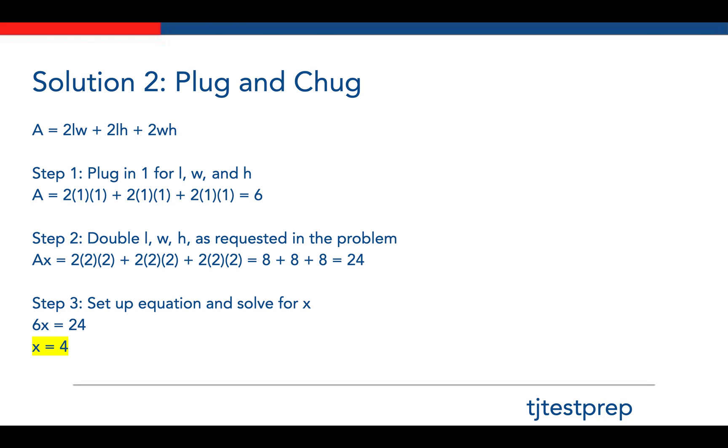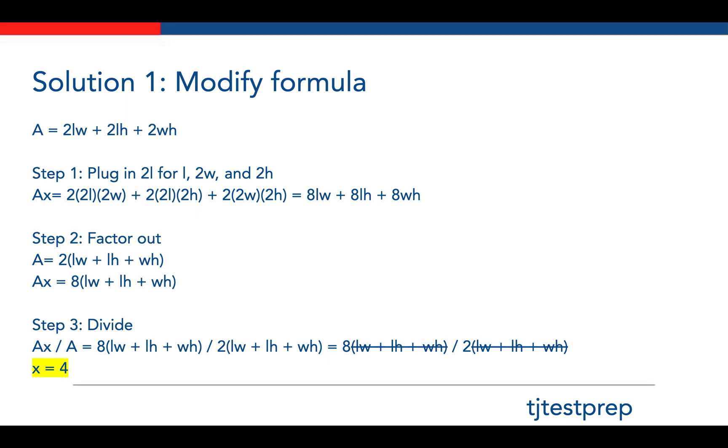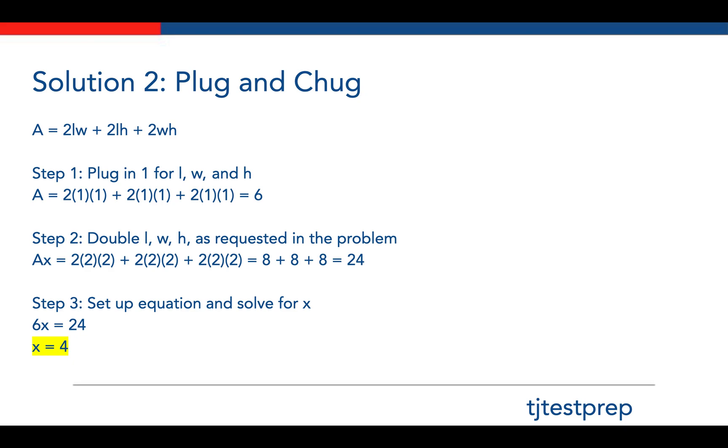So again, two solutions. Both are equally valid and accurate. But modified formula is a little bit slower than plug and chug. So we recommend that you do plug and chug for the TJ test.